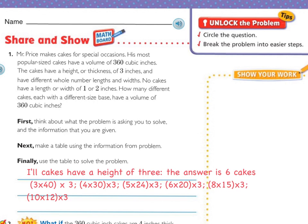The six different sizes are: base 3 times 40 with height 3; base 4 times 30 with height 3; base 5 times 24 with height 3; base 6 times 20 with height 3; base 8 times 15 with height 3; and base 10 times 12 with height 3. That gives you 1, 2, 3, 4, 5, 6 possible cake suggestions. Now try the on-your-own problem. You may also work with a partner. Good luck.